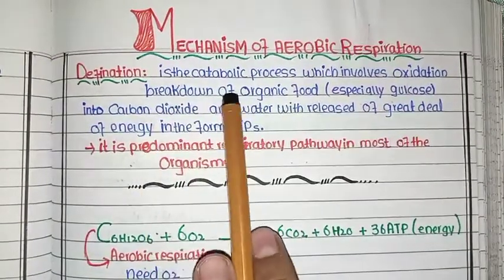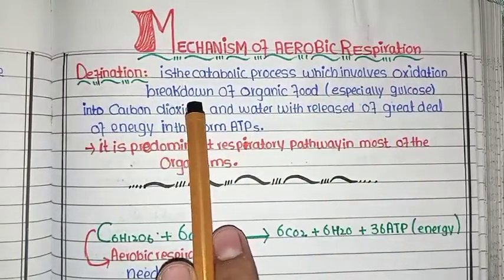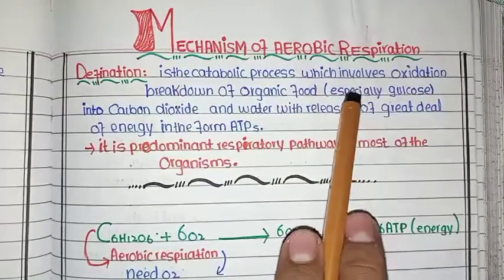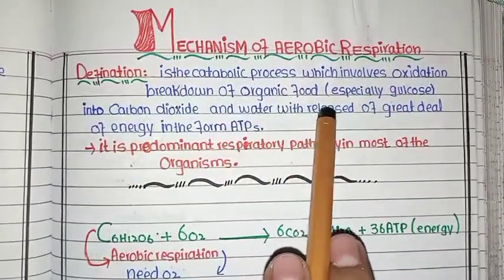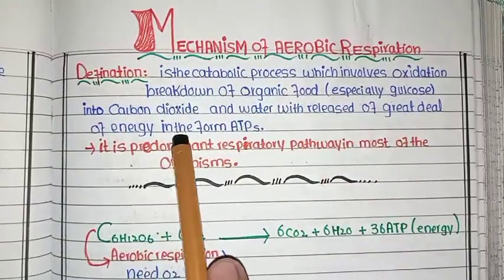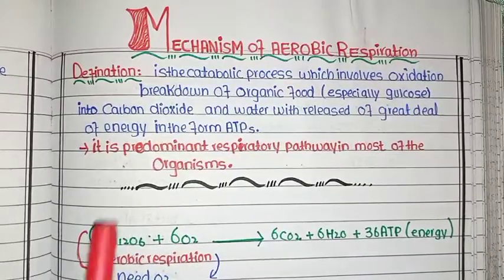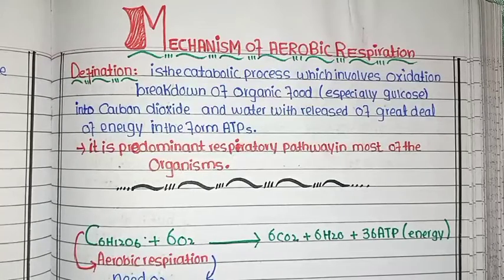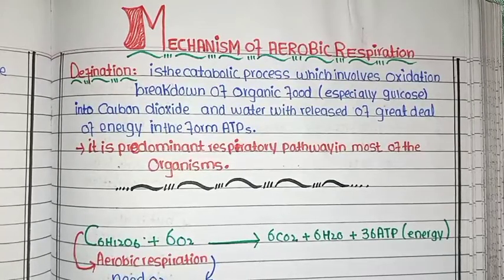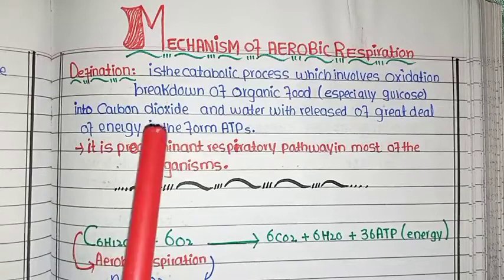Aerobic respiration is a catabolic process which involves oxidation and breakdown of organic food, especially glucose, into carbon dioxide and water with the release of a great deal of energy in the form of ATP. Catabolic process means breaking down a complex substance, releasing energy and some byproducts.